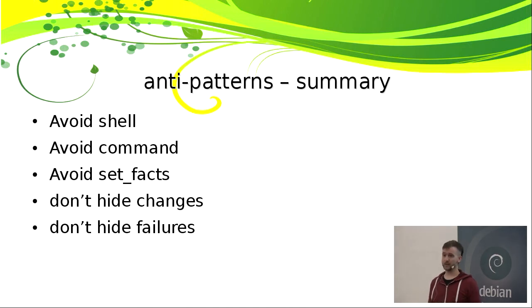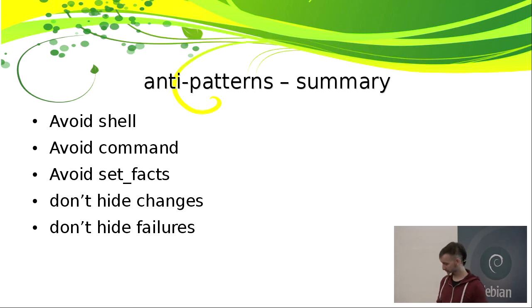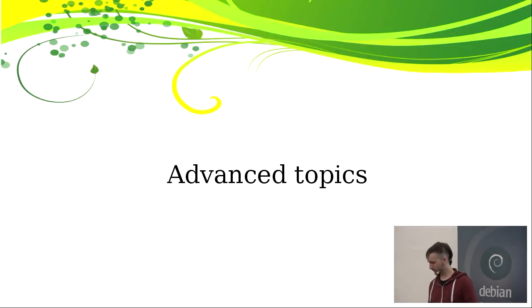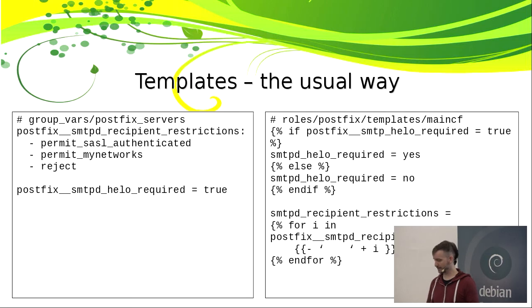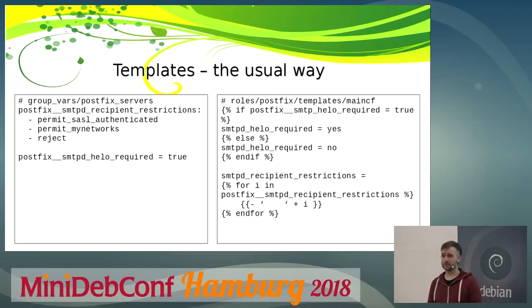Don't hide changes with changed_when. The clean approach is to use one task to check something and a second task to actually execute based on that. Also a bad idea: using failed_when: false to suppress errors — if something really breaks, you'll never find out.